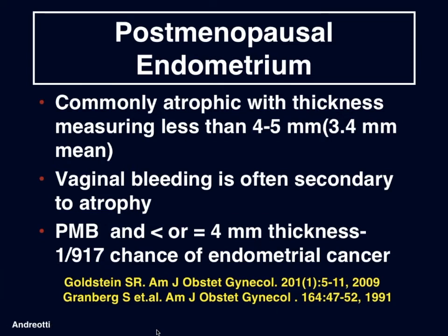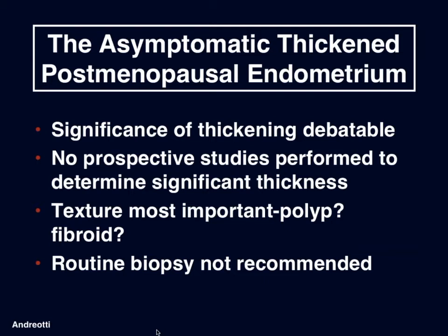What about the postmenopausal endometrium? This is commonly atrophic, with a thickness measuring less than 4 to 5 millimeters, with a mean of about 3.4 millimeters. Vaginal bleeding in these patients is often secondary to just atrophy, the lining being so thin. If these patients have bleeding and it's less than or equal to 4 millimeters in thickness, there is a very small chance of endometrial cancer — reported to be about 1 in 917.